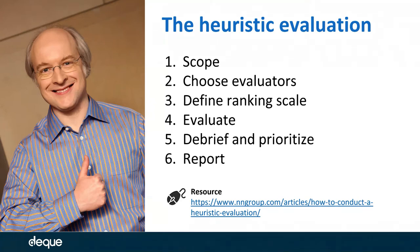You evaluate the system against each of those heuristics, note what the issues are, when they occur, how they can be fixed. If you have multiple evaluators, you debrief and prioritize the findings by consensus, then create a report of those findings. For those of you doing accessibility evaluations, this process probably looks very similar to what you're already doing.